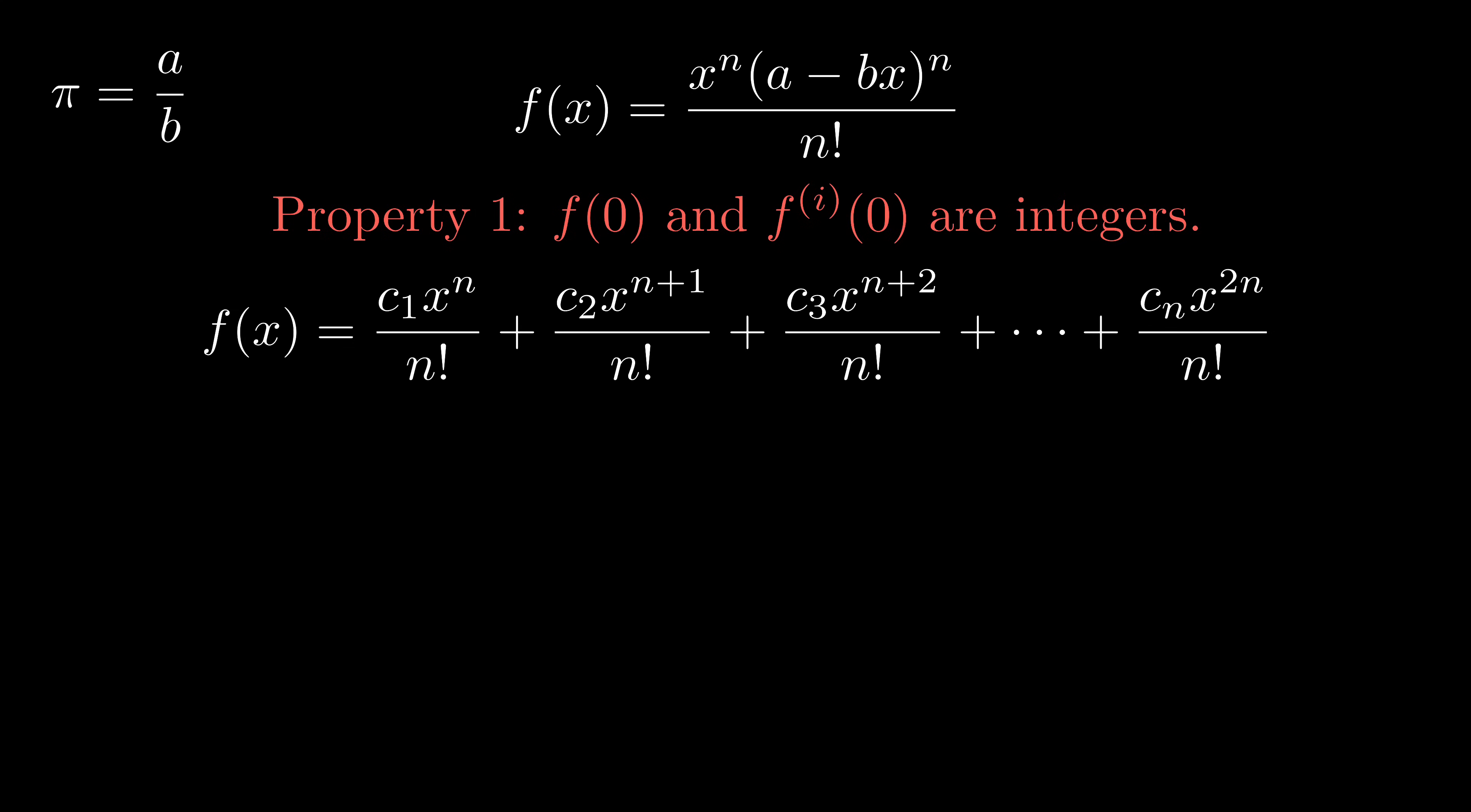And they are because a and b are integers. If you want, you can calculate the exact values of them using the binomial formula. As an easiest example, c1 is just a to the power of n.